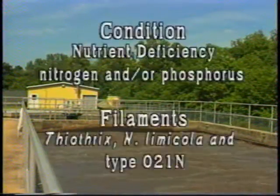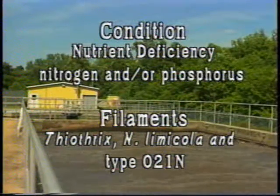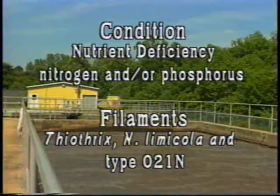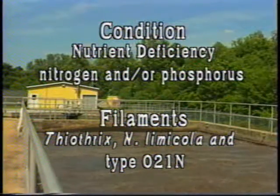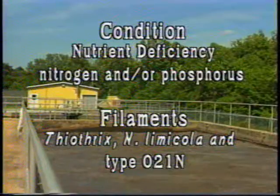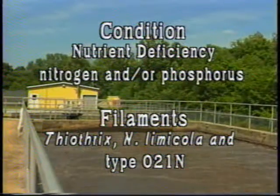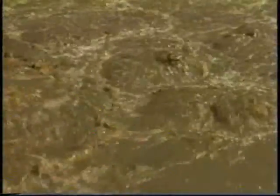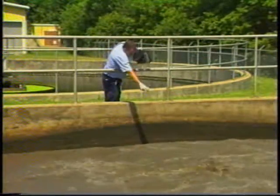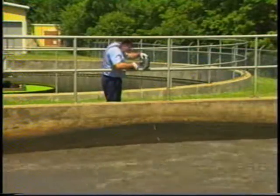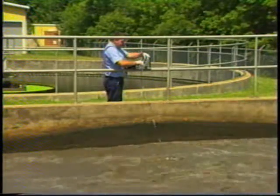Thiothrix 1 and 2, Nostocoida limicola 3, and type 021N also cause bulking at nutrient deficient conditions, usually low nitrogen and/or phosphorus. This is generally not a concern for domestic wastewater treatment systems, but it can be a problem in industrial wastewater systems and municipal systems that accept a significant amount of industrial wastewater.